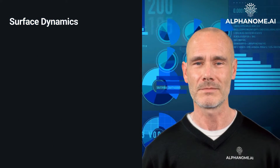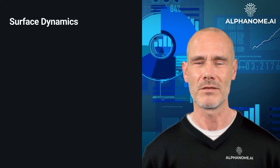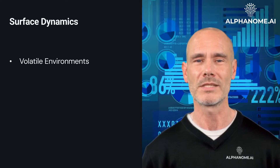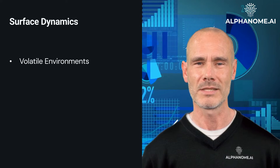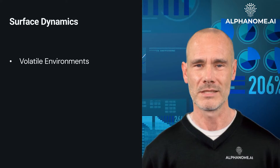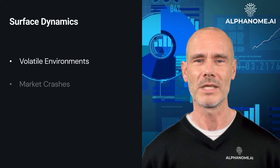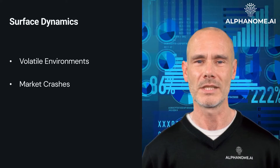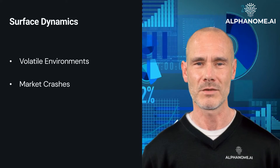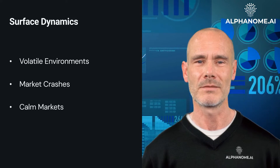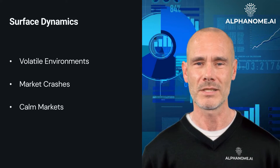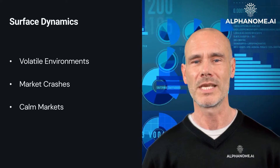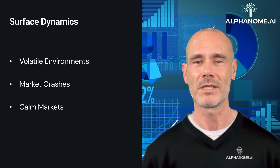How the volatility surface shifts and evolves over time provides signals about changing market conditions. When markets are volatile, the entire volatility surface tends to become elevated and exhibit a more pronounced smile, reflecting higher probabilities of large moves priced in. Following a major sell-off, volatility surfaces often develop a sharp negative skew, with puts becoming extremely expensive as investors brace for further downside. Extended periods of low volatility can cause volatility surfaces to flatten as options become cheaper to reflect lower expected swings. Monitoring surface dynamics proactively helps anticipate potential volatility regime shifts.